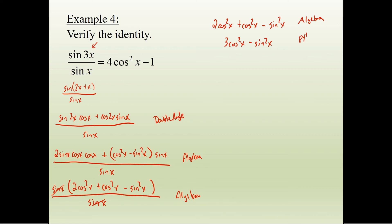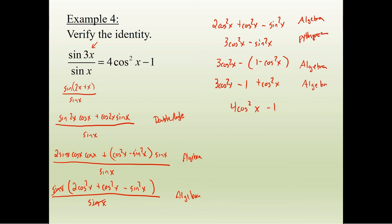Now using the Pythagorean identity, we're trying to get only cosines. We rewrite sine squared x as 1 minus cosine squared x. This gives 3 cosine squared x minus (1 minus cosine squared x), which is 3 cosine squared x minus 1 plus cosine squared x. Combining gives 4 cosine squared x minus 1, which is exactly what we wanted. The more you practice, the more you'll recognize these tricks — keep a cheat sheet of common patterns.